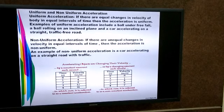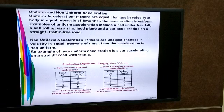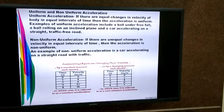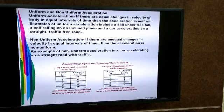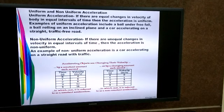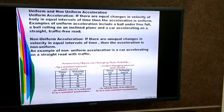Now let's look at the second table on the right-hand side. Time is recorded at equal intervals: 0, 1, 2, 3, 4 seconds. At 0 seconds, velocity is 0 m/s. After 1 second, velocity is 1 m/s. After 2 seconds, velocity is 4 m/s, and so on.